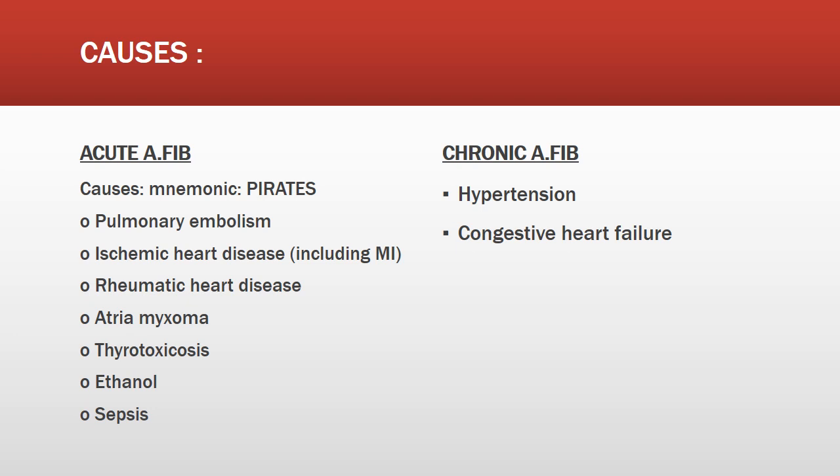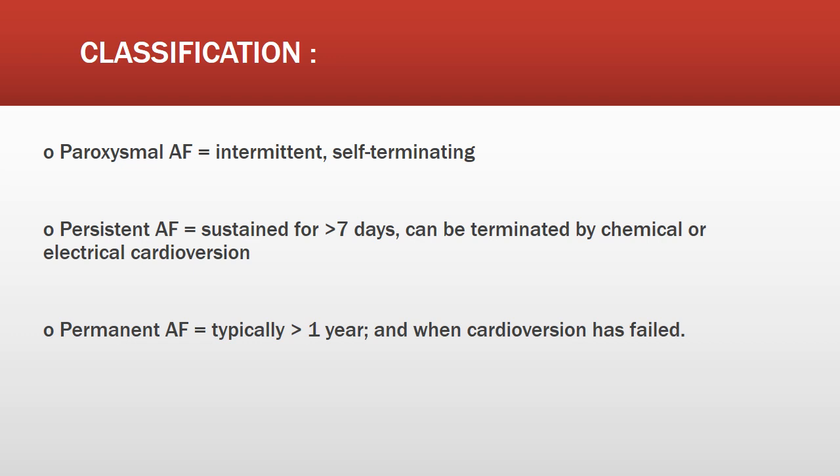Chronic atrial fibrillation is caused by hypertension or congestive heart failure. There are three classification types: paroxysmal AF is intermittent and self-terminating; persistent AF sustains for more than seven days and can be terminated by chemical or electrical cardioversion; permanent AF is typically of more than one year duration and cardioversion has failed.